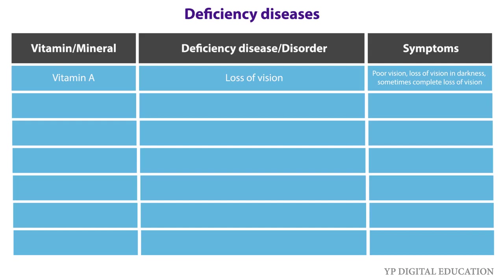Vitamin B1: the disease from vitamin B1 deficiency is beriberi. Symptoms include weak muscles and very little energy to work. Vitamin C: the disease is scurvy, and the symptoms are bleeding gums and wounds that take a longer time to heal.